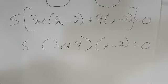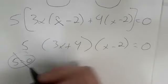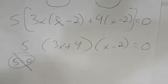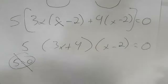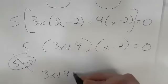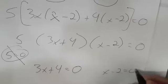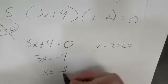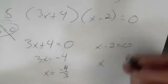Step one was to set one side equal to zero. Step two was to fully factor. Step three is the zero product rule. You might notice that five can never equal zero — so if you have a constant factor, you don't have to worry about it. But if there is a variable in a factor, you do have to account for it. So either 3x plus 4 equals zero, giving x equals minus 4 thirds, or x minus 2 equals zero, giving x equals 2.